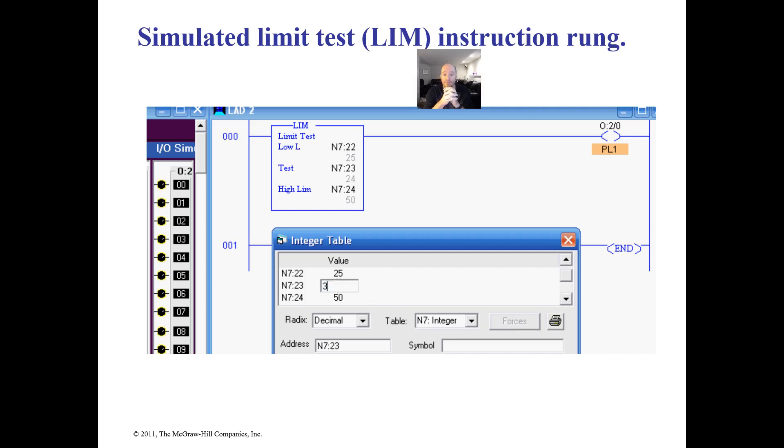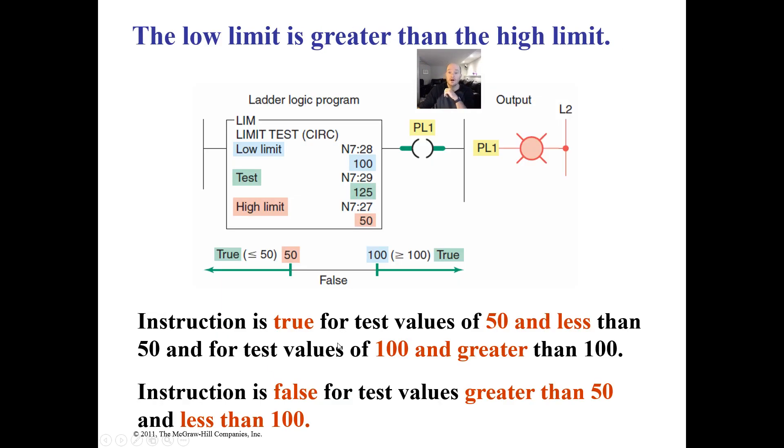That's the way the limit works. This can be used when I can just now have one timer and I can use compare instructions to activate a bunch of different things. Let's say I have a timer that goes for an hour. In between minute 15 and 45 I want my heater to be on. I can do that with a limit test.